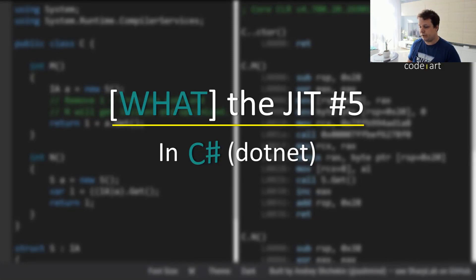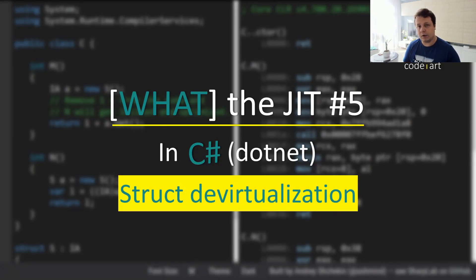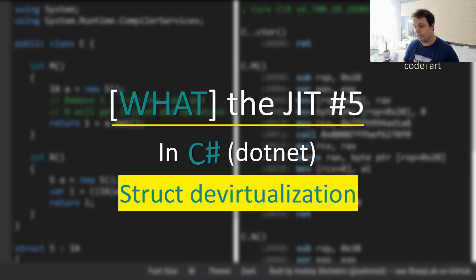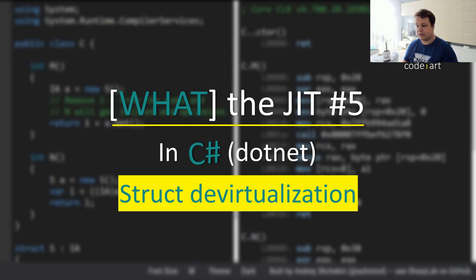Hi everyone and welcome to another JIT video. Today we're going to be talking about struct devirtualization. This feature is very cool because not many people know that .NET supports automatic struct devirtualization out of the box. When we talk about devirtualization we usually mean type devirtualization through generic arguments, but this is not it. Struct devirtualization is a very fragile feature unfortunately, because you have to fulfill a very specific set of criteria for it to even work.